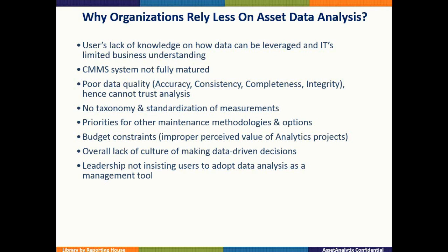For large companies, sometimes there is no standard taxonomy and measurements are not standardized, which leads to multiple assets with similar names or asset classes that are not well defined. Hierarchies are not deep enough, or sometimes work is charged to a functional location, physical location, or an asset inconsistently. These discrepancies can lead to bad decisions from the reports you might get. And of course, budget is also a constraint — you may allocate budget to other projects rather than to data analysis.